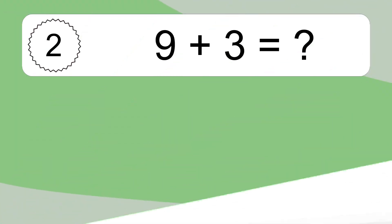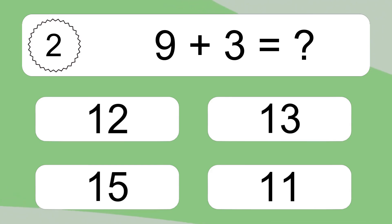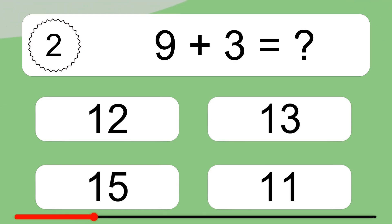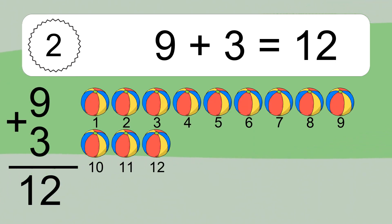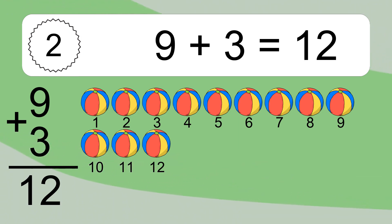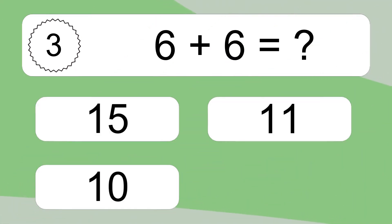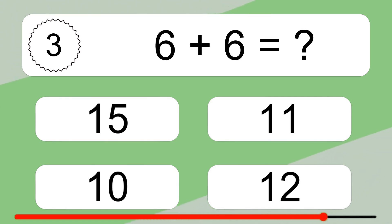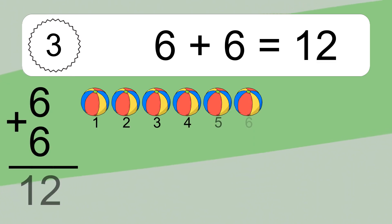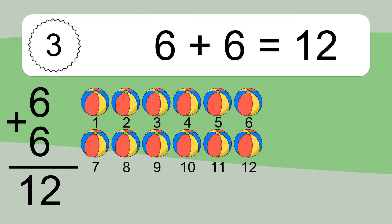Nine plus three equals what? Nine plus three equals twelve. Let's count it: one, two, three, four, five, six, seven, eight, nine, ten, eleven, twelve.